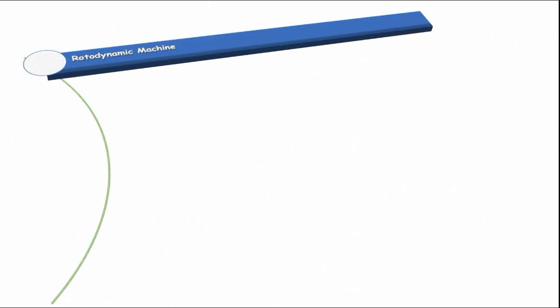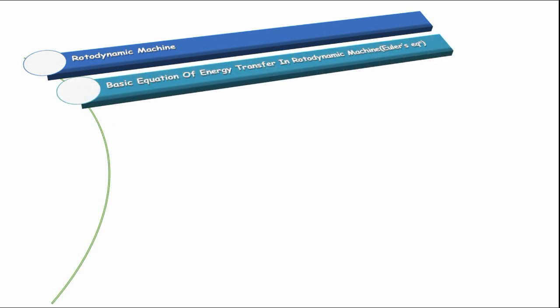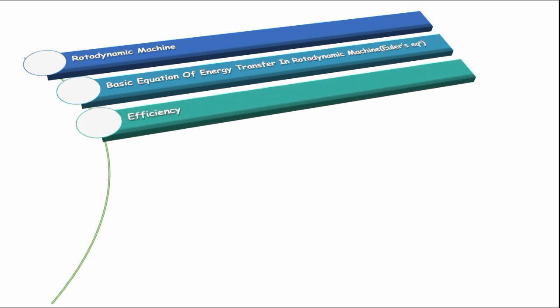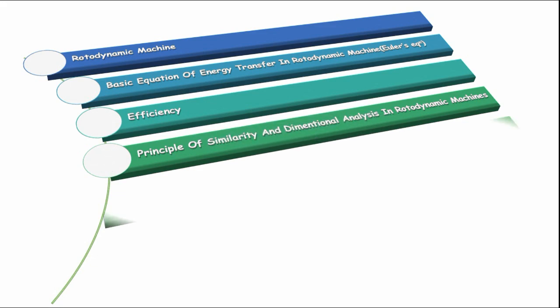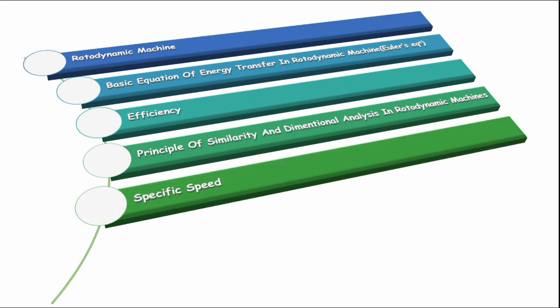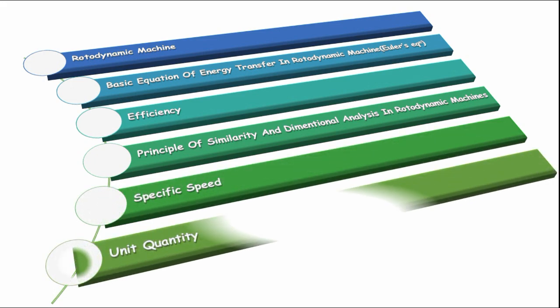Second, we will discuss the Euler's equation. Third, efficiency related to rotodynamic machines. Fourth, the principle of similarity and dimensional analysis in rotodynamic machines. Fifth, specific speed, and last one, unit quantity. In this lecture we will talk about topics related to GATE and ESE syllabus and we will discuss the respective questions of all these topics.